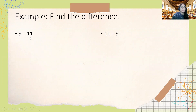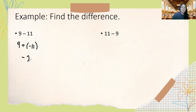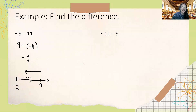Using our subtraction rule on 9 minus 11, we keep 9 the same, add instead of subtract, and write the opposite of 11, which is negative 11. Our answer is negative 2. You can verify this on the number line: start at positive 9 and move 11 spaces to the left, and you'll land on negative 2.